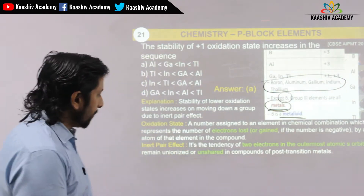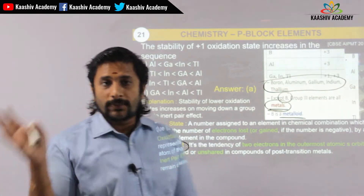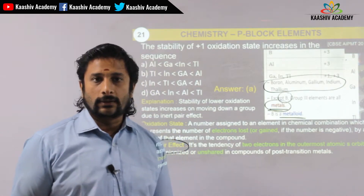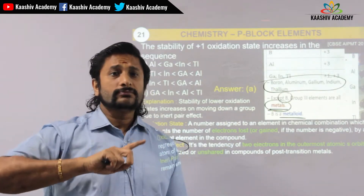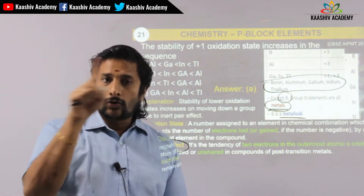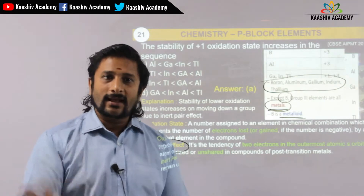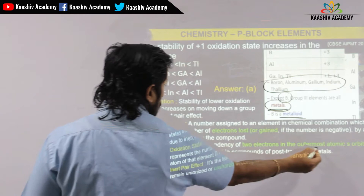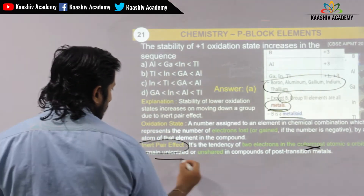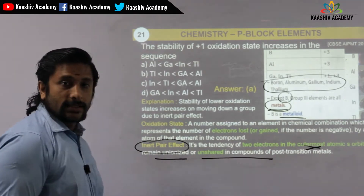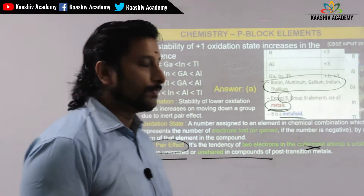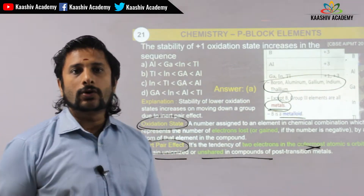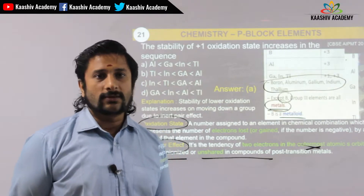In the boron group, there is a special nature called the inert pair effect. The outer orbit S-block and P-block electrons — the tendency of the electrons in the outermost atomic shell to remain unionized or unshared in compounds is called the inert pair effect.